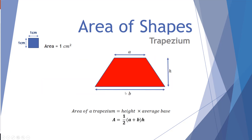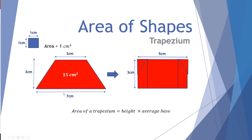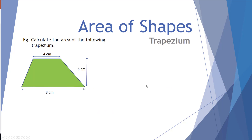Let's look at some examples. If we consider the top parallel line as length a and the bottom as length b, then (a + b) divided by 2 gives the average, multiplied by the height. Seven plus three gives 10; divided by 2 gives an average of 5; and 5 times a height of 3 gives 15.